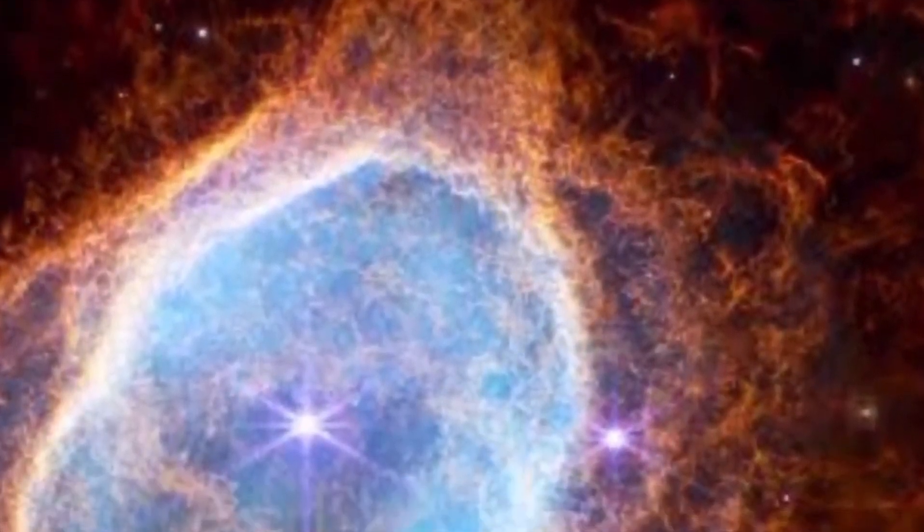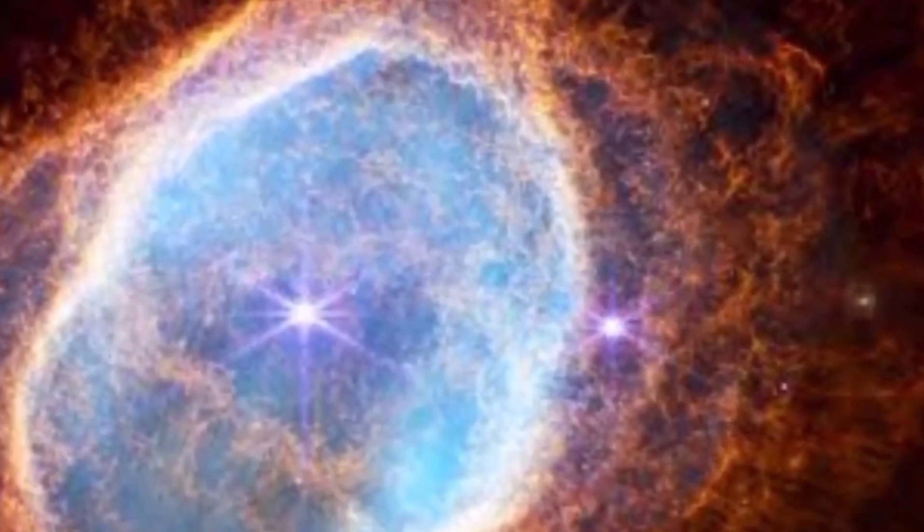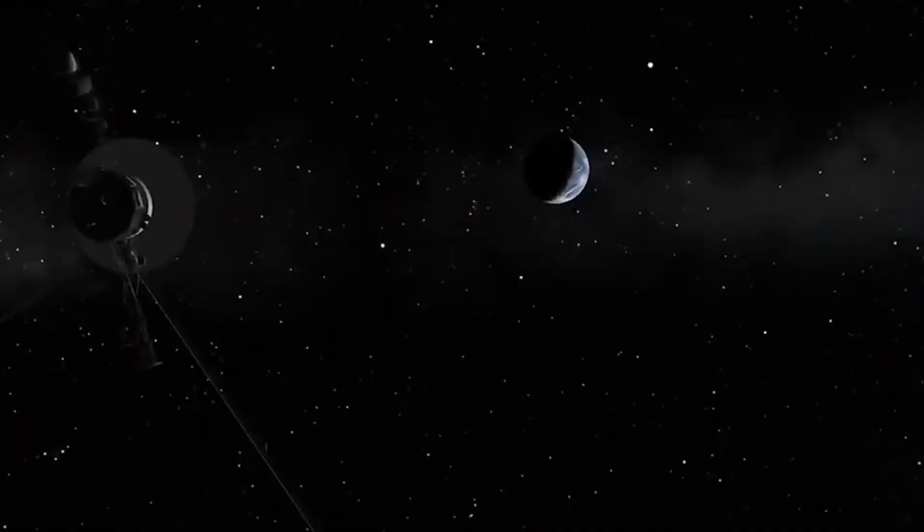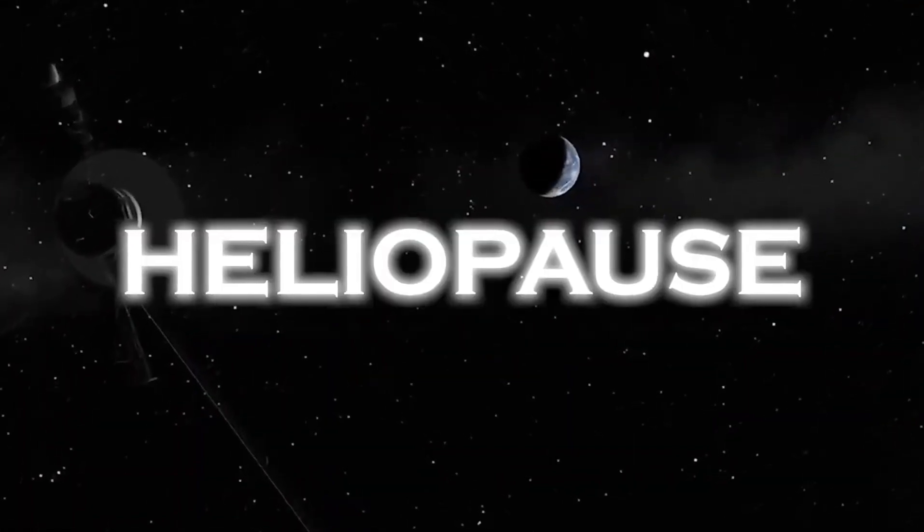Despite the extraordinary nature of the transmitted data, Voyager 1 itself remained unscathed, continuing to operate in excellent condition. Its communication link with Earth remained intact, and the signal retained its power, allowing valuable data to be sent to NASA without significant issues.